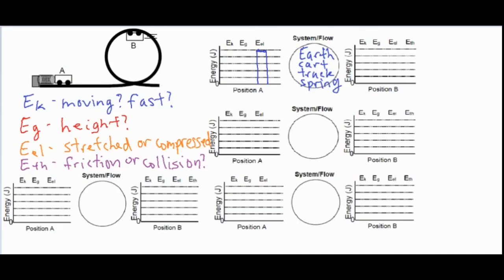At position B it definitely has a lot more height off the ground, and the little lines show it's in motion. At the top of the loop I'll say it has a little bit more gravitational potential energy than kinetic energy — so three blocks of gravitational potential and two blocks of kinetic — equaling the five blocks of elastic that was given initially. That is our first situation.